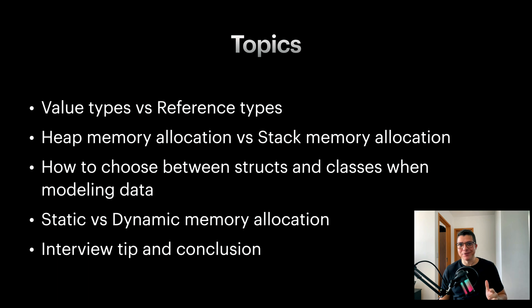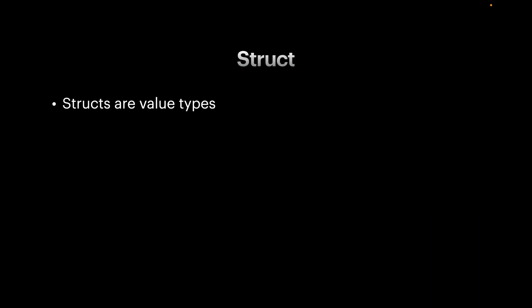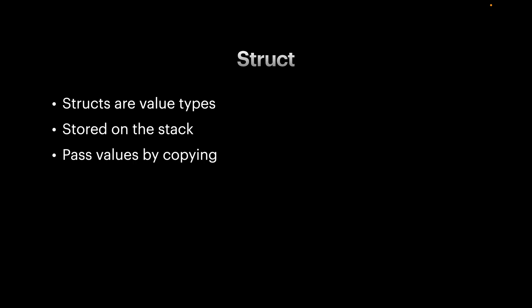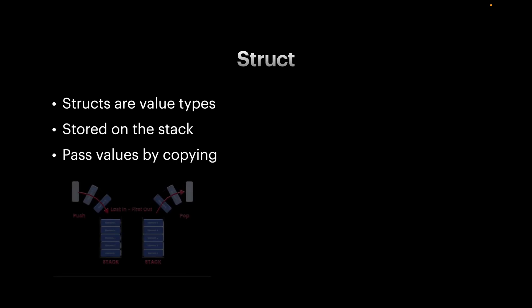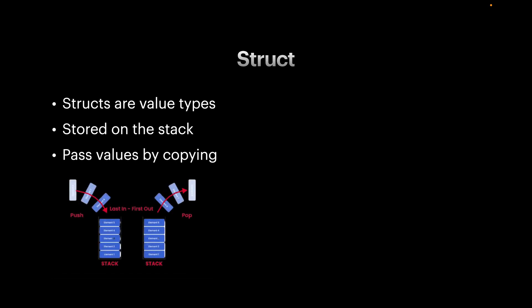Let's start with structs. Structs are value types and they are stored directly in memory on the stack. They hold their data and make a copy when passed to another variable or function. This behavior is perfect for simple, independent data structures, like the temperature struct I'm going to show you right now.